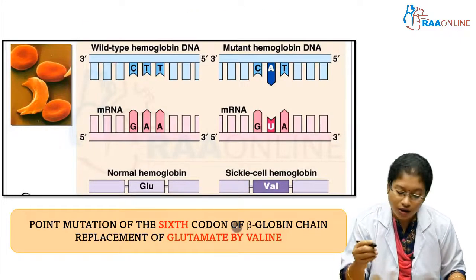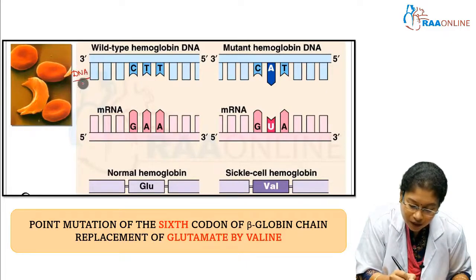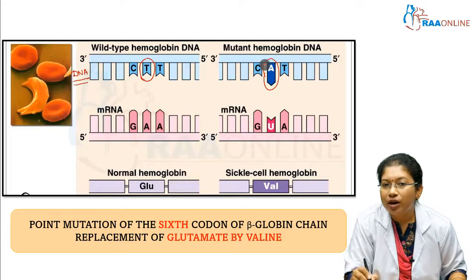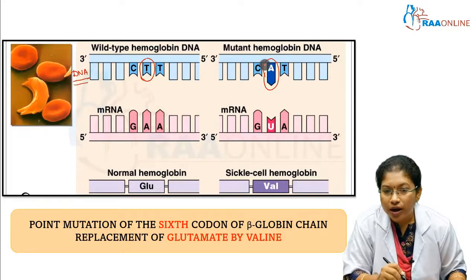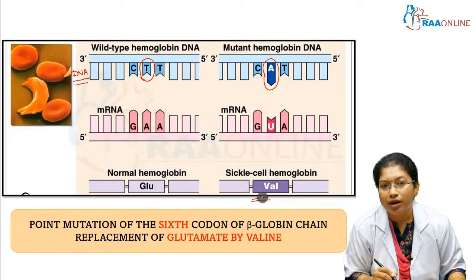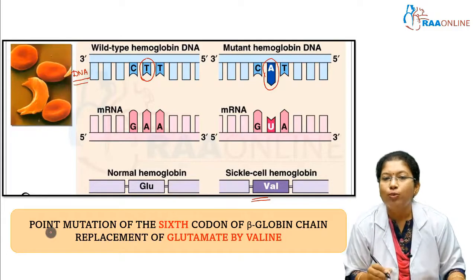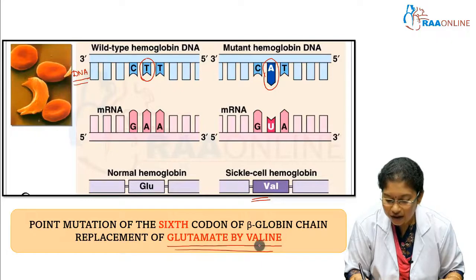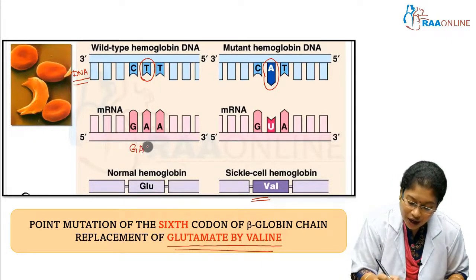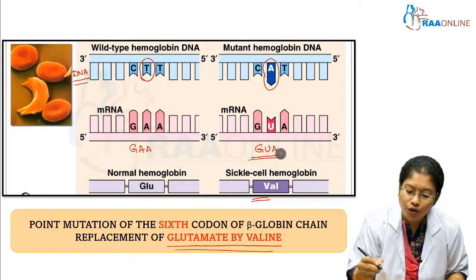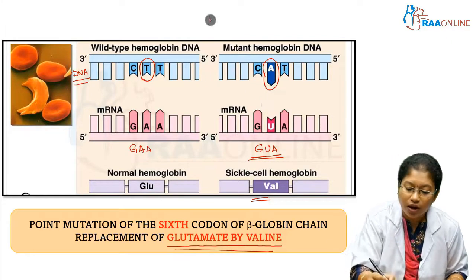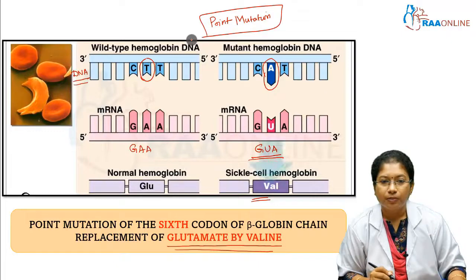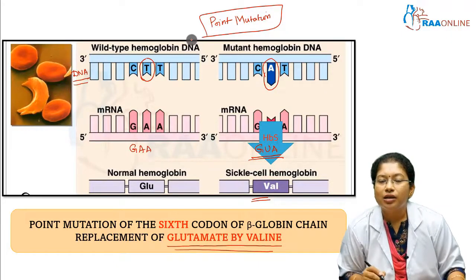In sickle cell anemia, you can see in the DNA that T is changed to adenine — T is replaced by A. So valine is produced instead of glutamate at the sixth position. There is a point mutation of the sixth codon of the beta globin chain, resulting in replacement of glutamate by valine. The codon GAA has become GUA due to this single base mutation, resulting in sickle cell hemoglobin.